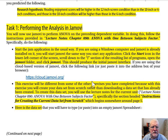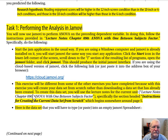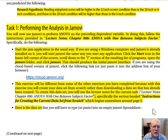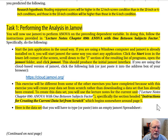If you're instead using the cloud-based version, click the provided link, respond to the prompts, and the JMOVI interface will open. This exercise will be different from some others because you'll create your data set from scratch rather than downloading a pre-created data set. To create this data set, you'll use Lecture Notes, Chapter 090 — specifically the section headed 'Instructions for Creating the Current Data Set from Scratch,' which begins around page 5. Here is the data set that you will type or paste into your JMOVI spreadsheet.